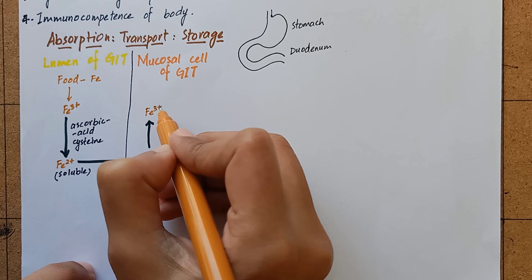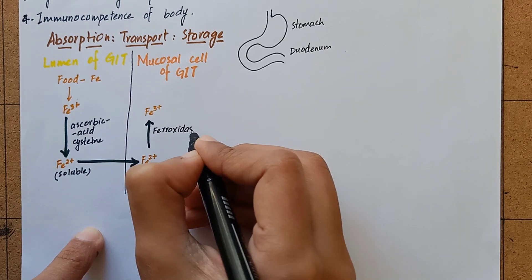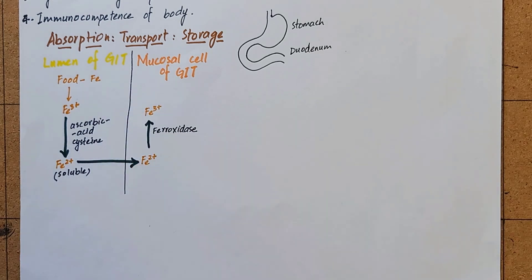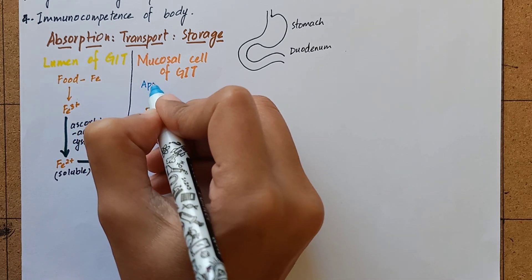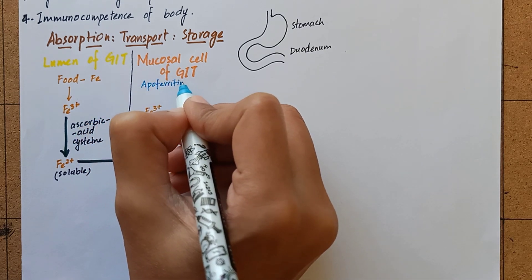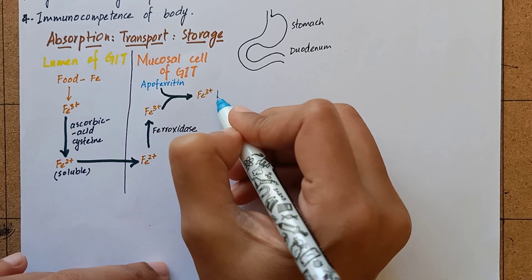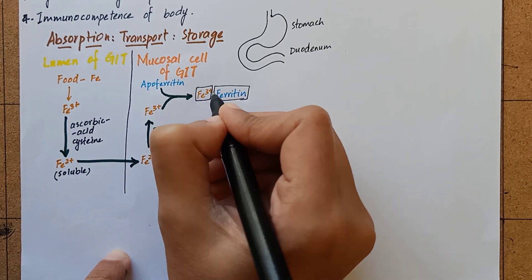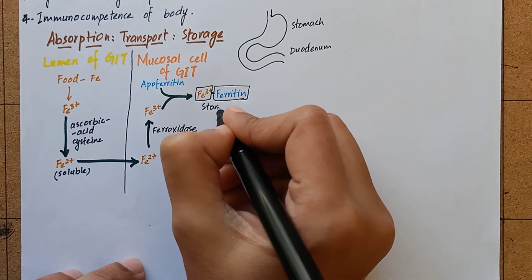The mucosal cells contain an enzyme ferroxidase which oxidizes ferrous iron back to ferric iron. This iron then combines with apoferritin to form ferritin which is the temporary storage form of iron in mucosal cells of intestine.